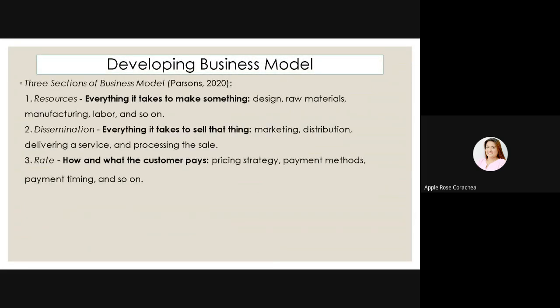There are three sections of a business model. Number one is resources — everything it takes to make something like design, raw materials, manufacturing, labor, and so on. Number two is dissemination — everything it takes to sell that thing, like marketing, distribution, delivering a service, and processing the sales. Number three is the rate — how and what the customers pay, like pricing strategy, payment methods, payment timing, and so on.